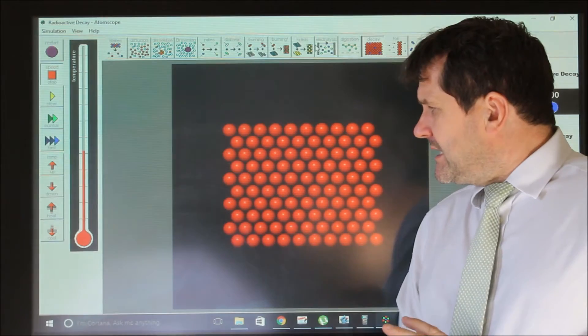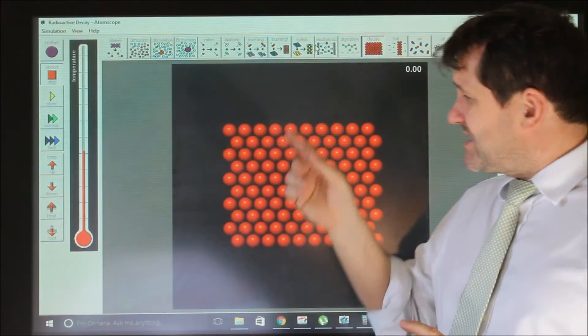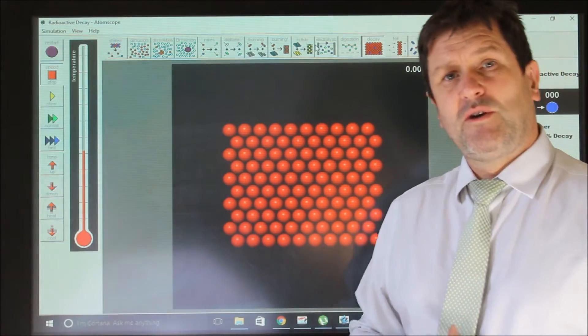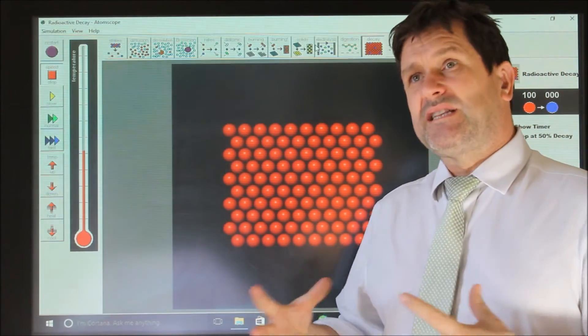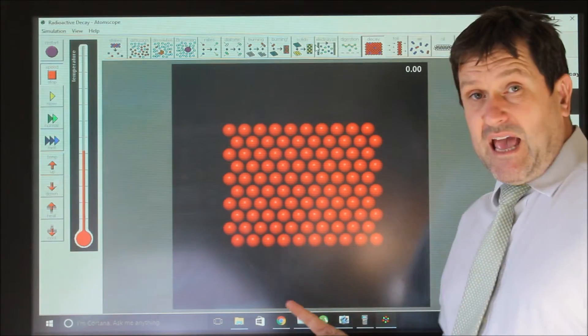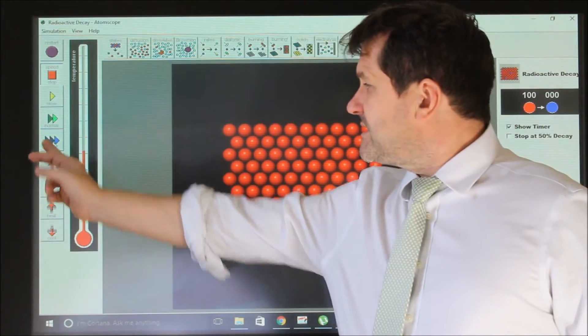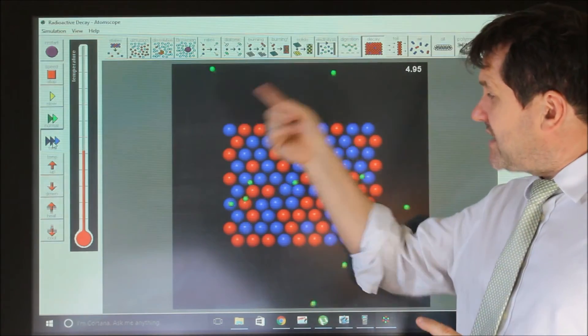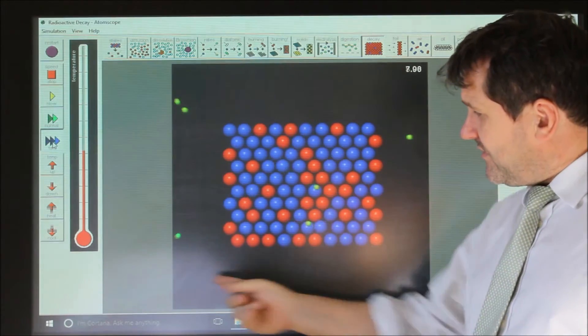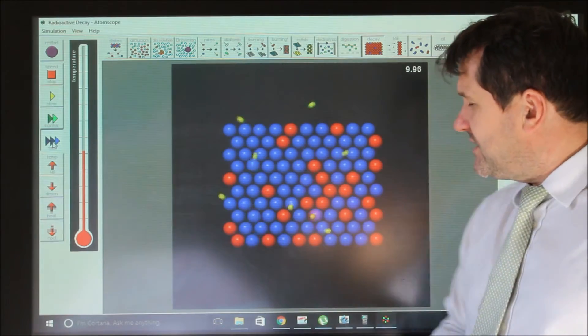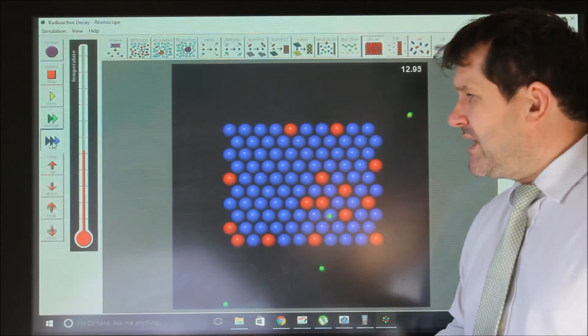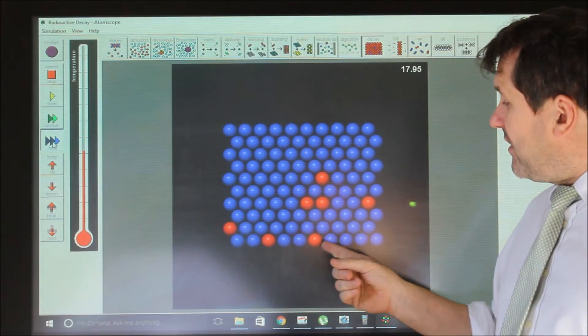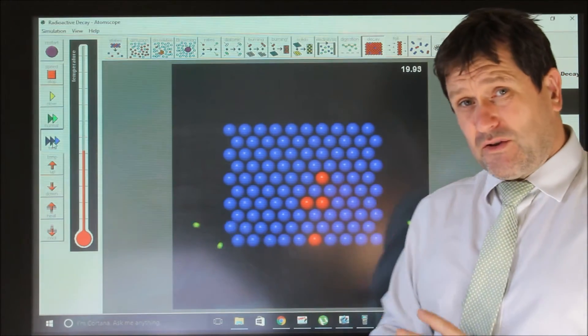However, we can say with some certainty overall how many will decay in a given time. While we cannot look at any particular nucleus and say it will decay now or then, as a sample, especially if the sample is large, we can begin to understand it statistically. The green balls are demonstrating the activity of the sample, the amount of radiation given off. Once they turn from red to blue, they have decayed their alpha or beta radiation and are now stable. They're no longer unstable; they've given off the radiation and now they're stable.